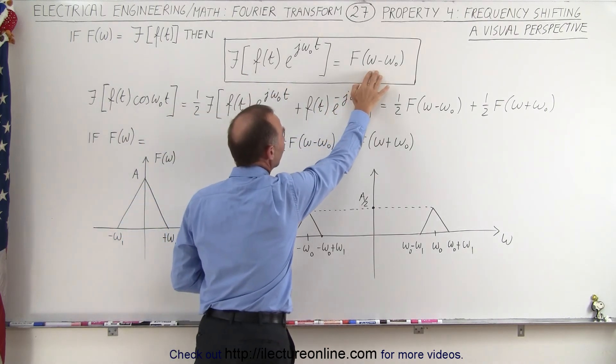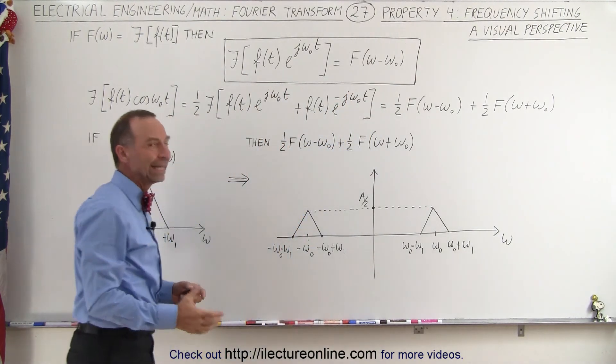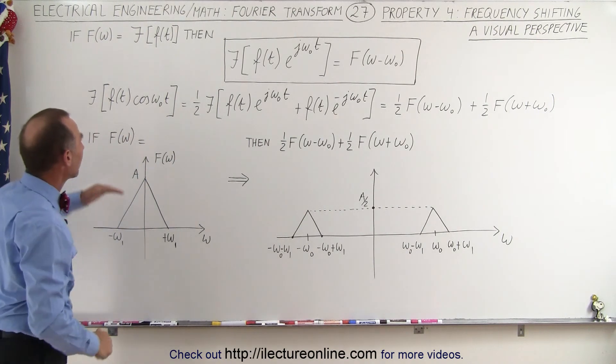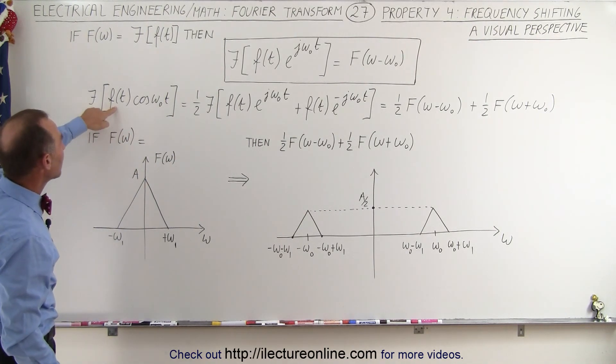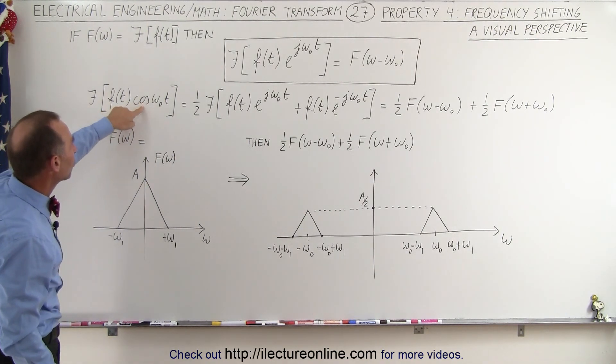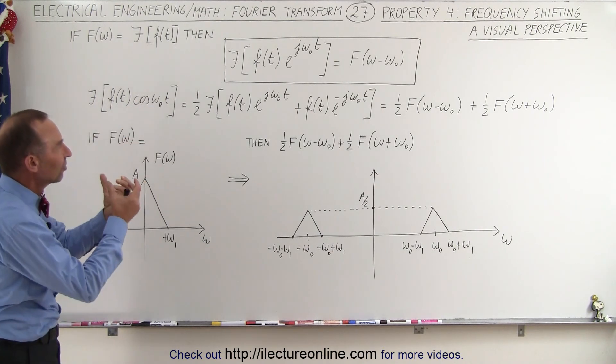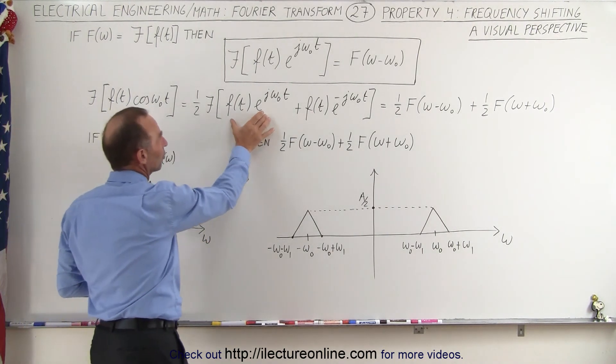That means that in the frequency domain there will be a shift of omega 0 in the frequency. So now you can see that if you multiply the time domain function by the cosine of omega t, we actually separate that into two separate functions.